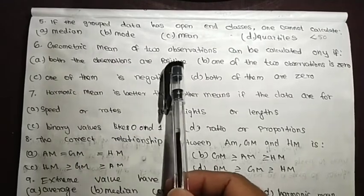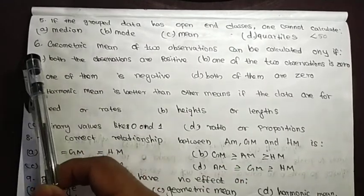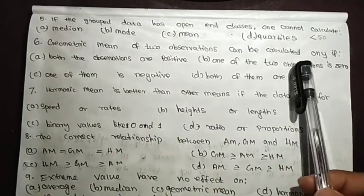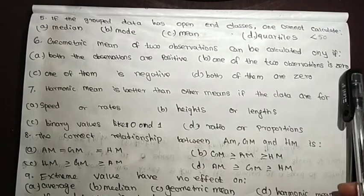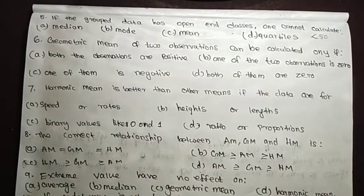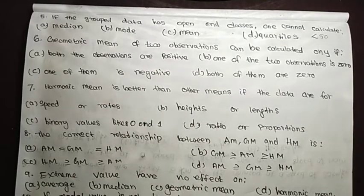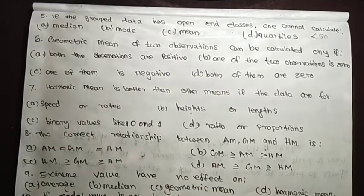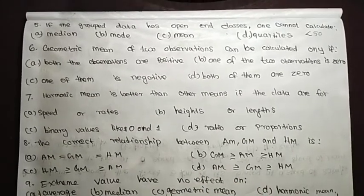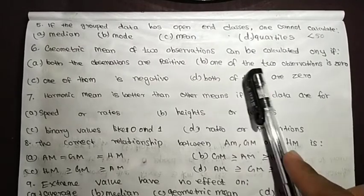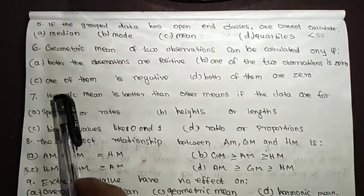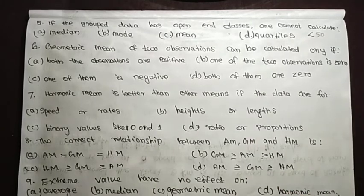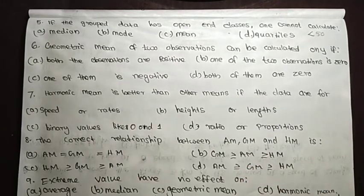Question 6: The geometric mean of two observations can be calculated only if both observations are positive. Other options — one of them is zero, one is negative, or both are zero — are incorrect.